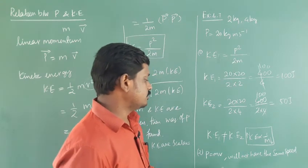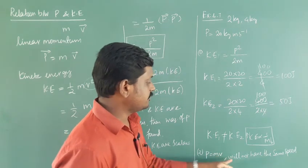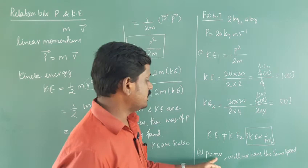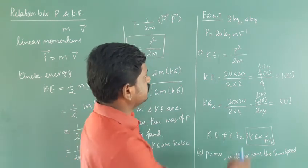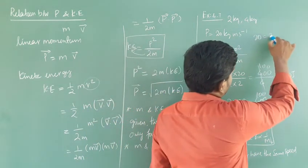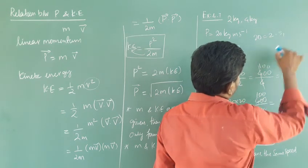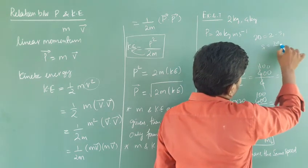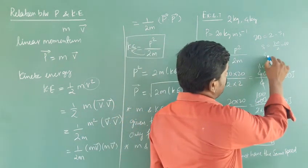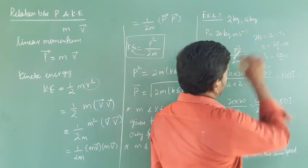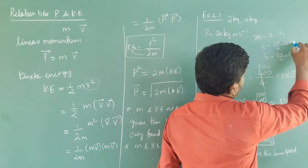Then, will they have the same momentum? P is equal to mass into velocity. Here the masses will not have the same speed. Substitute: P is equal to 20, mass 2 into speed. So S1 equal to 20 by 2, you will get 10 meter per second. Then for the second one, 20 by 4, that is mass 4 kg, so you will get 5 meter per second. Different speed.